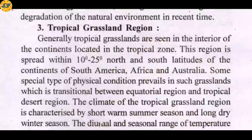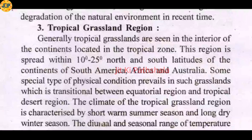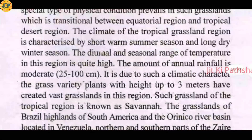Especially in continents like South America, Africa, and Australia, some special type of physical conditions prevail in such grasslands, which is transitional between the equatorial region and the tropical desert region. The grassland found here is a little different from what we see in the equatorial region.